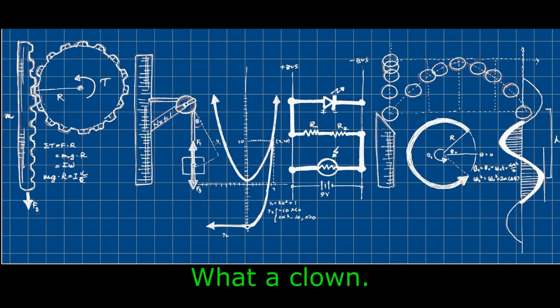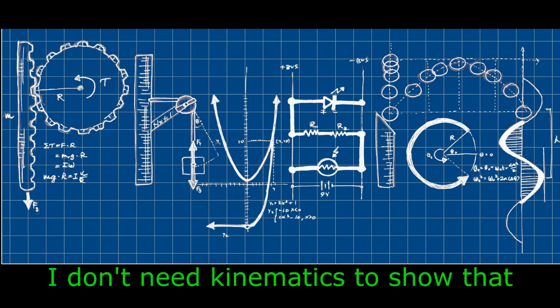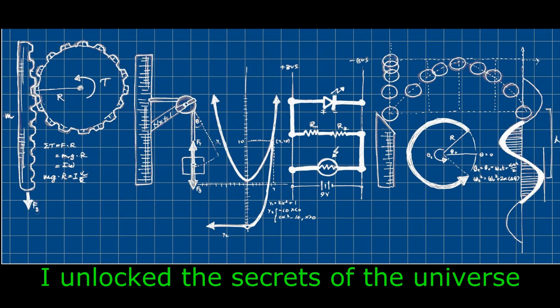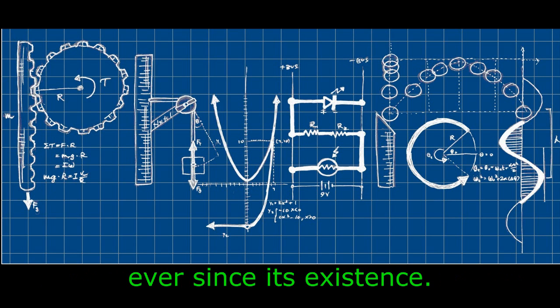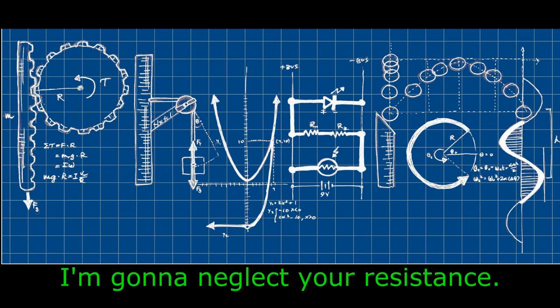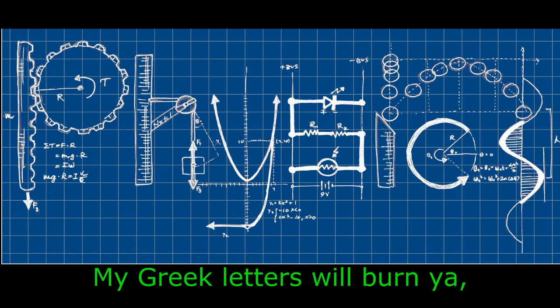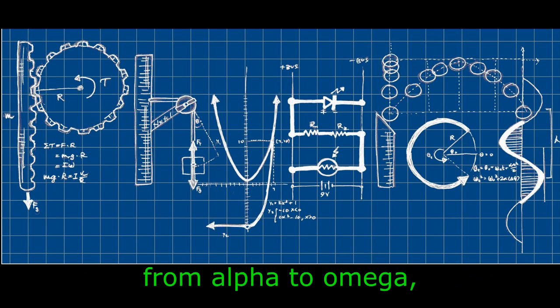Pop, is that all you got for me? What a clown. I don't need kinematics to show that you're going down. I unlocked the secrets of the universe ever since its existence. Like your homework problems, I'm gonna neglect your resistance. My Greek letters will burn ya, from alpha to omega, eta, theta, iota,